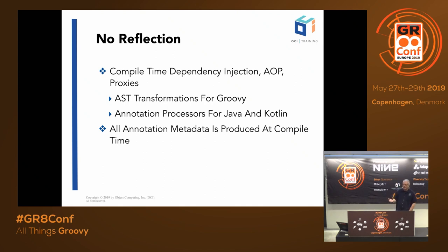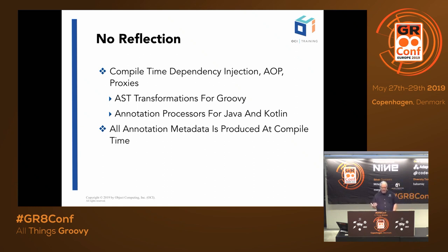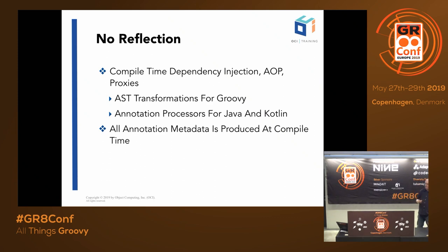The way we got rid of reflection is by moving that work to compile time. With Java, Micronaut does that with Java compile-time annotation processors. Micronaut is a polyglot framework — we support Java, Groovy, and Kotlin. With Java we use annotation processors; for Kotlin we use KAPT, the Kotlin annotation processing tool, which piggybacks on the Java annotation processors; and for Groovy classes we use AST transformations, which are a kind of compiler extension that allows you to do interesting things at compile time.